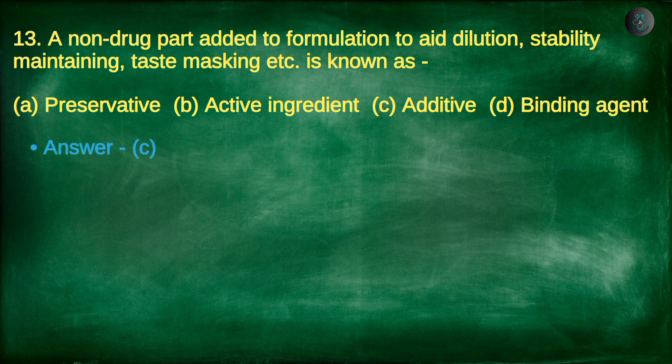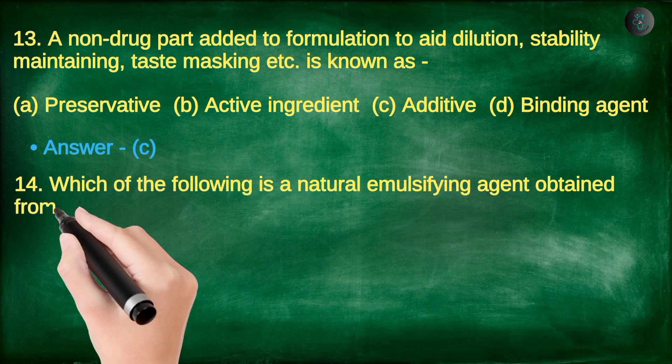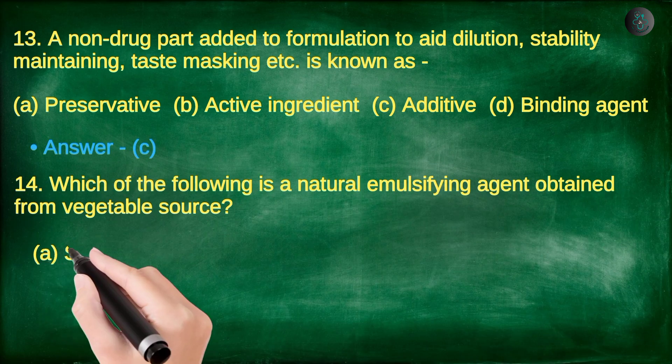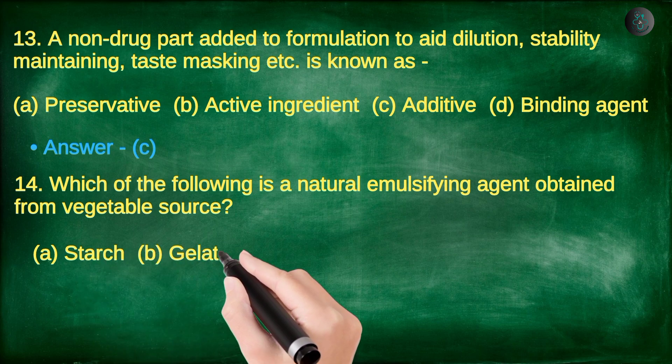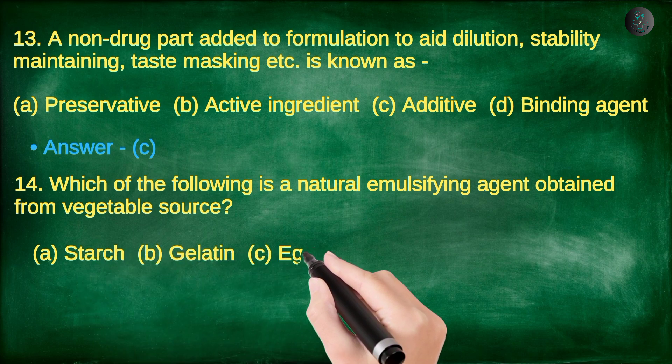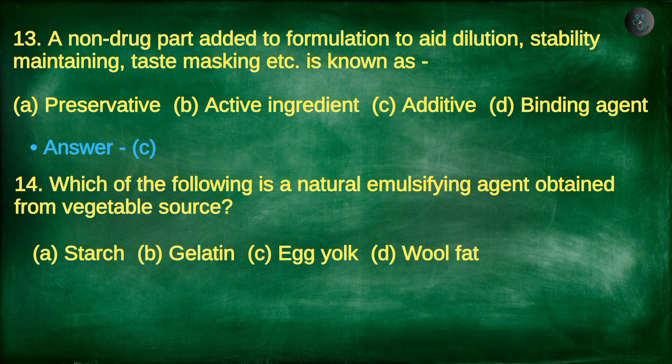Next question. Which of the following is a natural emulsifying agent obtained from a vegetable source? A. Starch, B. Gelatin, C. Egg Yolk, D. Wool Fat.